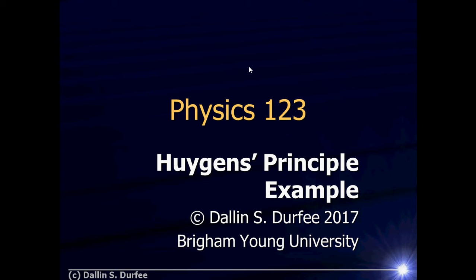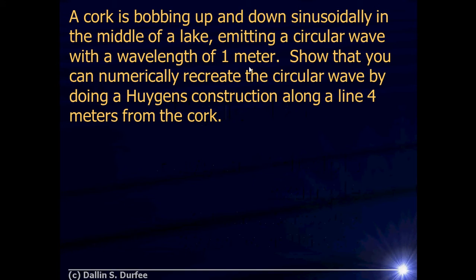My fellow physicists, today we are going to do an example with Huygens construction. Here's our problem. A cork is bobbing up and down sinusoidally in the middle of a lake, emitting a circular wave with a wavelength of one meter. Show that you can numerically recreate the circular wave by doing a Huygens construction along a line four meters from the cork.